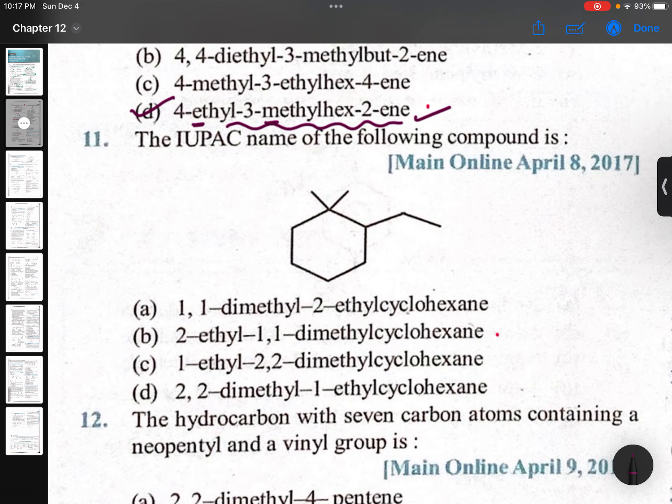The IUPAC name of the following compound is: this is first place, this is second place - 2-ethyl-1,1-dimethyl. Why 2-ethyl first? Because alphabetical. Why not 1,1,2? No - numbers should be minimum. Lowest numbers are always preferred.